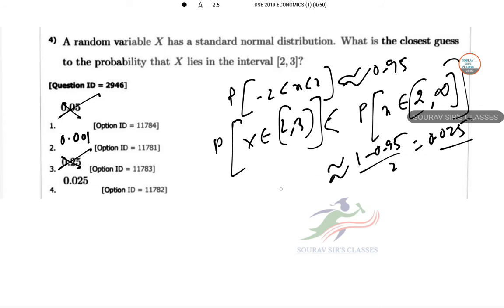Most of the mass from 2 to infinity is contained in the 2 to 3 part, so most of the portions. The best guess for the probability is 0.025. So option number 4 is correct.